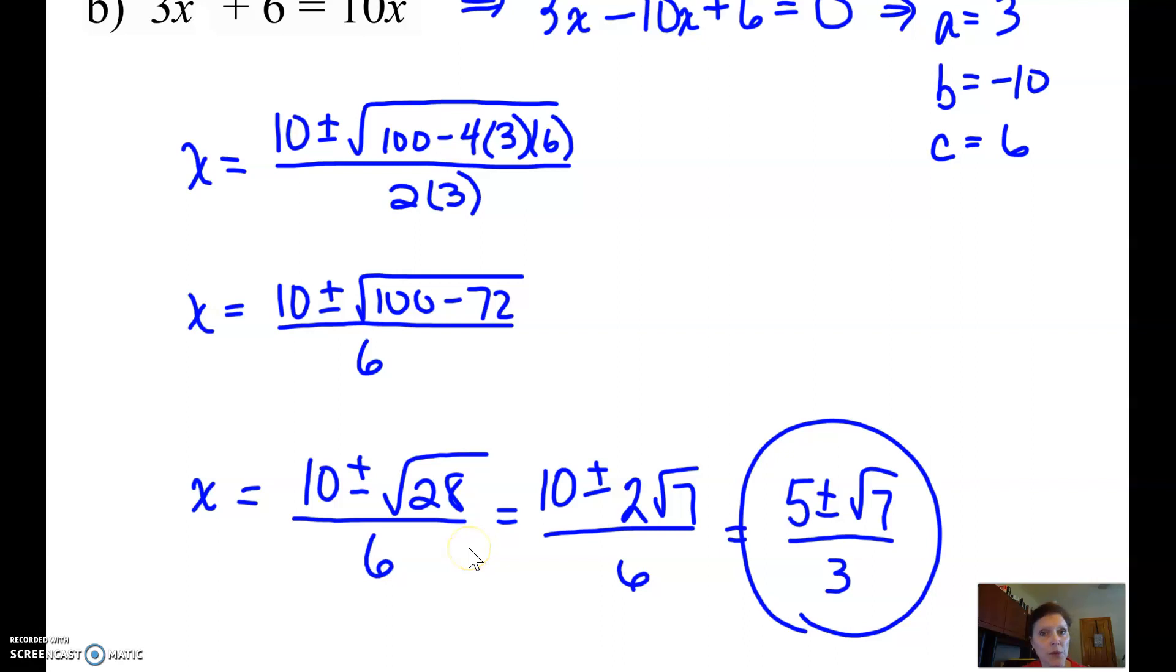Reduce your square root. The square root of 28 breaks down as 2 times 14, 2 times 7, so the two 2s come out, and we get a 2 on the outside, and we get this kind of ugly answer.